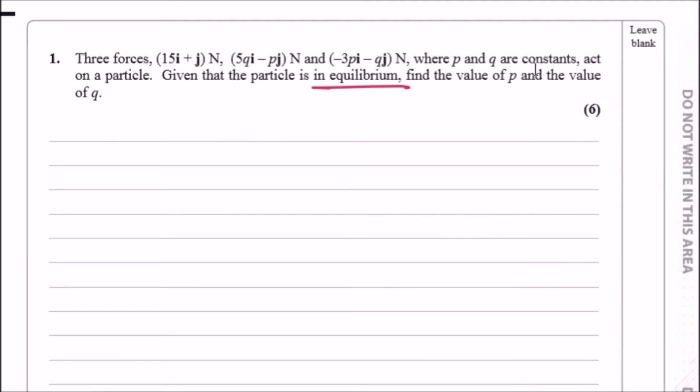The key idea here is to realize that we can work in i's and j's separately. If we're going to sum up each force, we can work in i's first. Then we can say that 15 + 5q - 3p must result in 0i, correct?